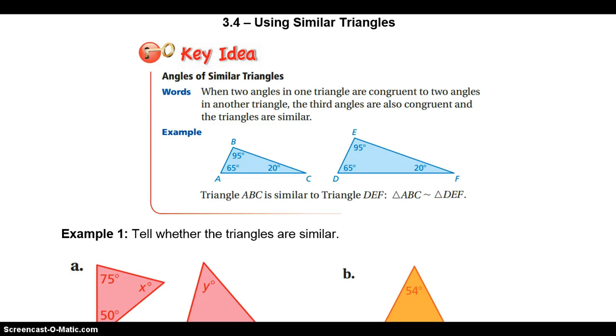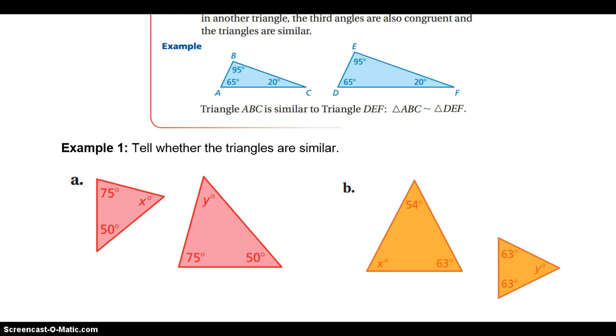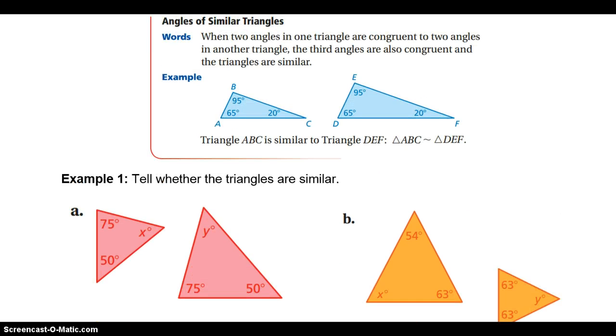Today we're going to talk about similar triangles, the angles of similar triangles. When two angles in one triangle are congruent to two angles in another triangle, the third angles are also congruent, and the triangles are similar.